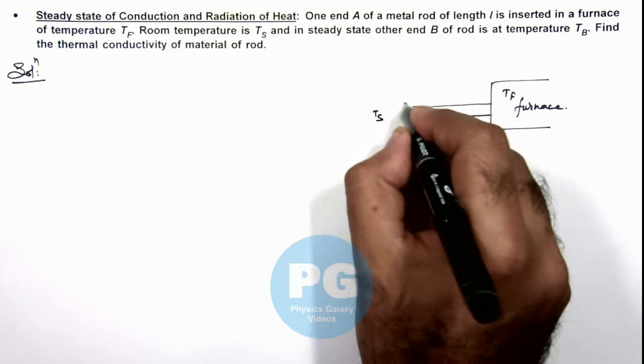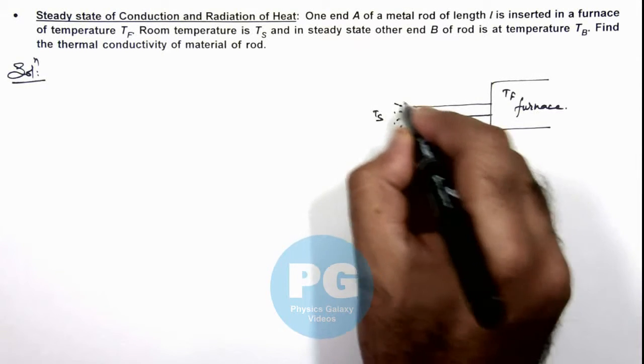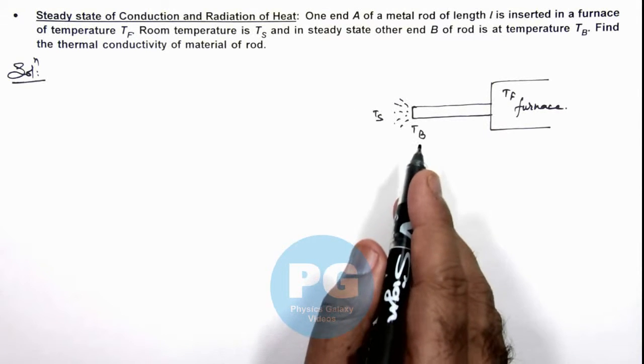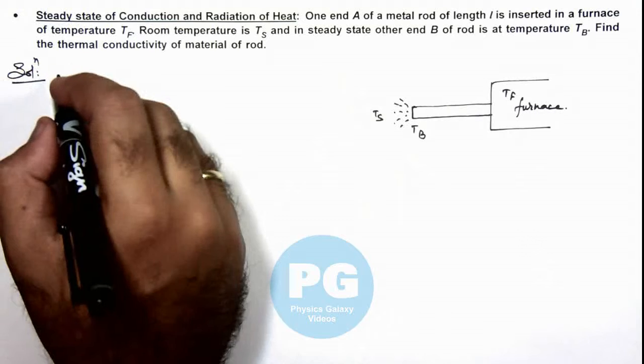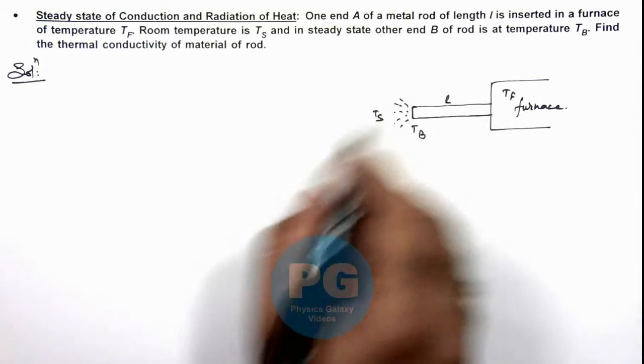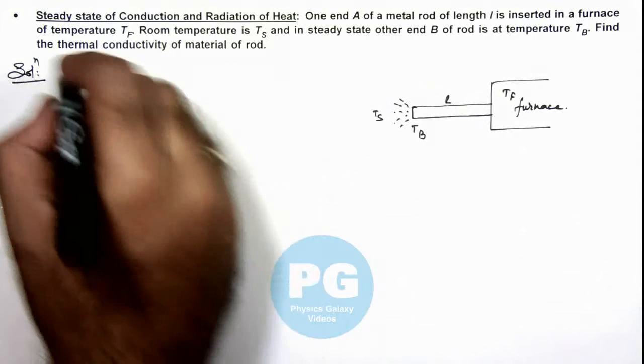Here, heat is radiated from the other end to the surrounding. Now in this situation, if we analyze the case, the length of this rod we consider as l, which is given to us. Here we can write at end B...